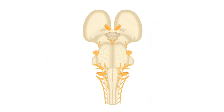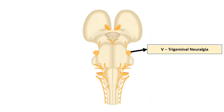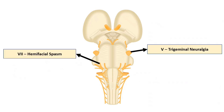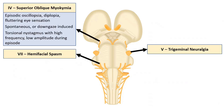Thinking about the syndromes we see — the common ones, trigeminal neuralgia and hemifacial spasm, I'm not going to talk about in huge detail because they deserve more time. The less common ones came up a lot when I was doing MCQs for the exam, so it's worth knowing about them. For the trochlear nerve, you can get superior oblique myokymia, which is when you get episodic oscillopsia and/or diplopia associated with torsional nystagmus.